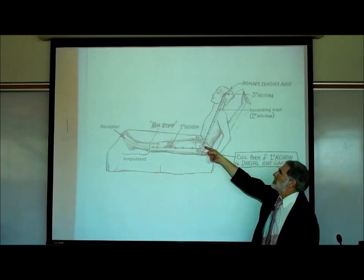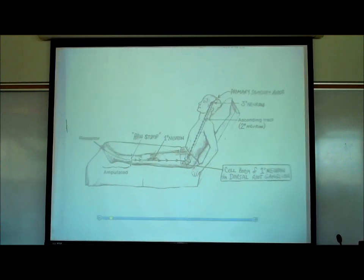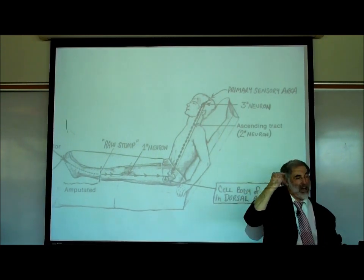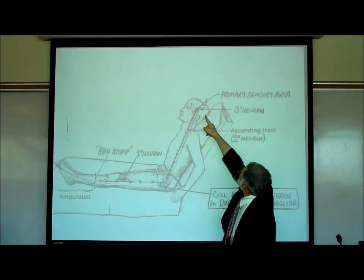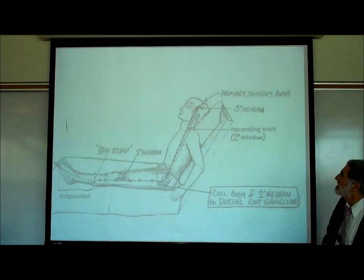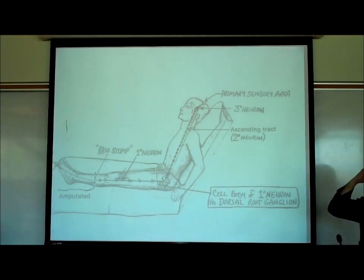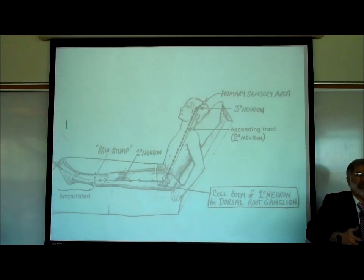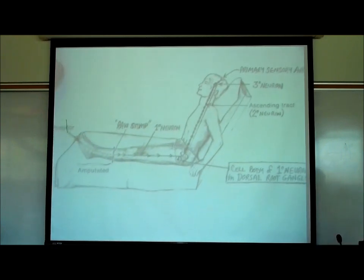The signal synapses onto the second neuron in this sequence, which is always a myelinated interneuron that typically sends the signal to the thalamus of the brain. There in the thalamus, this second neuron synapses onto a third-order neuron — the third neuron in the sequence — that sends the signal to the primary sensory area in the parietal lobe of the cerebral cortex, which receives most sensory information about touch, vibration, temperature, pain, and proprioception.